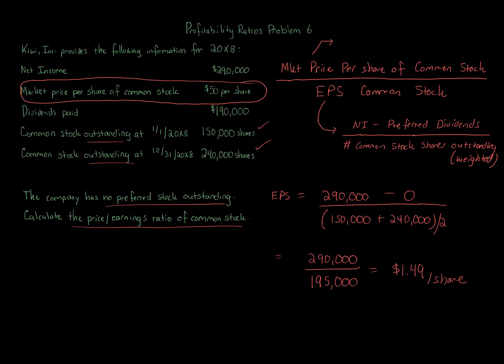So we just take $50, that's the top number. The bottom number is the $1.49 per share. So we divide that and we're going to get 33.56 times.